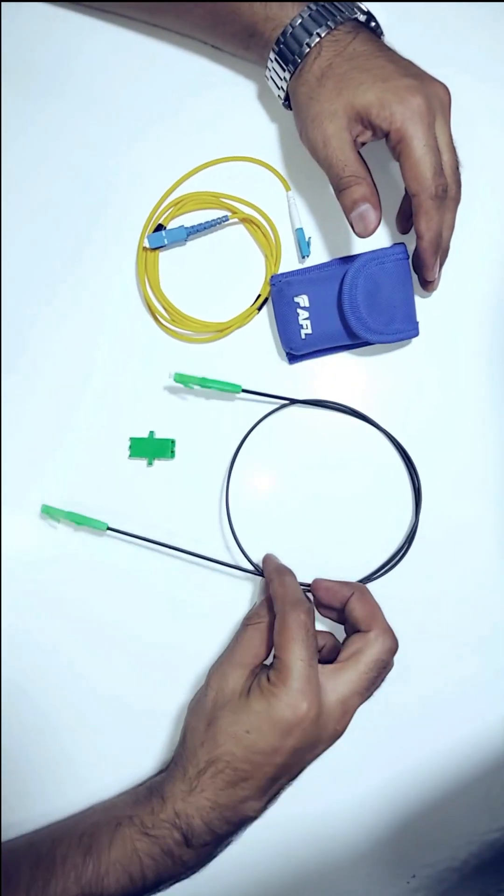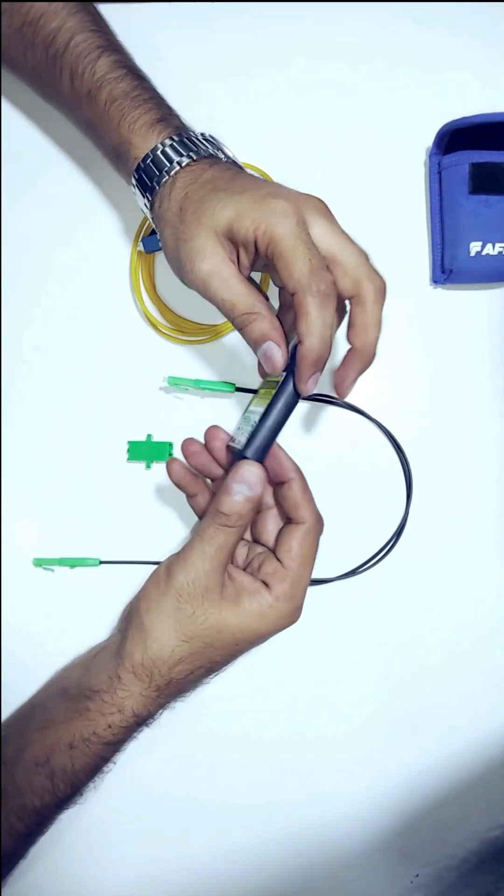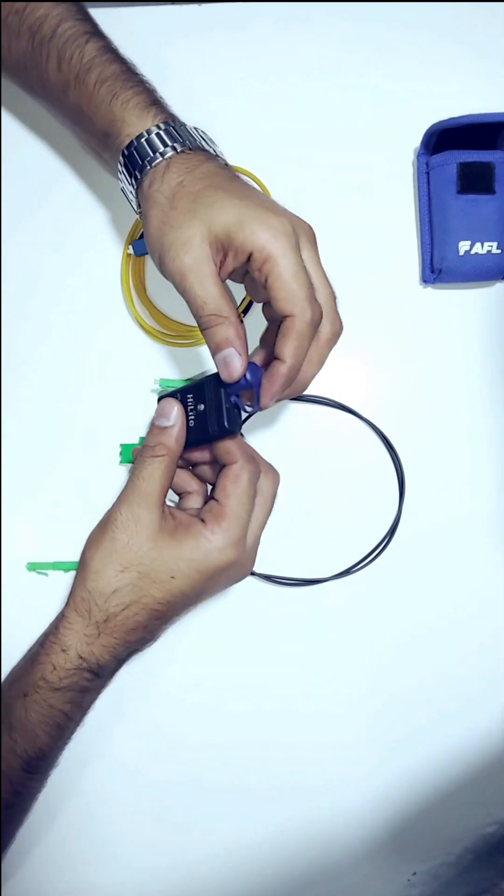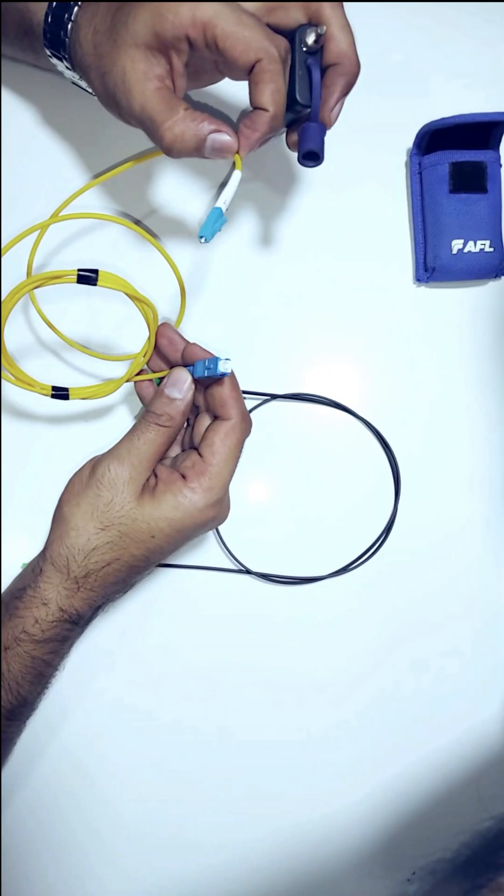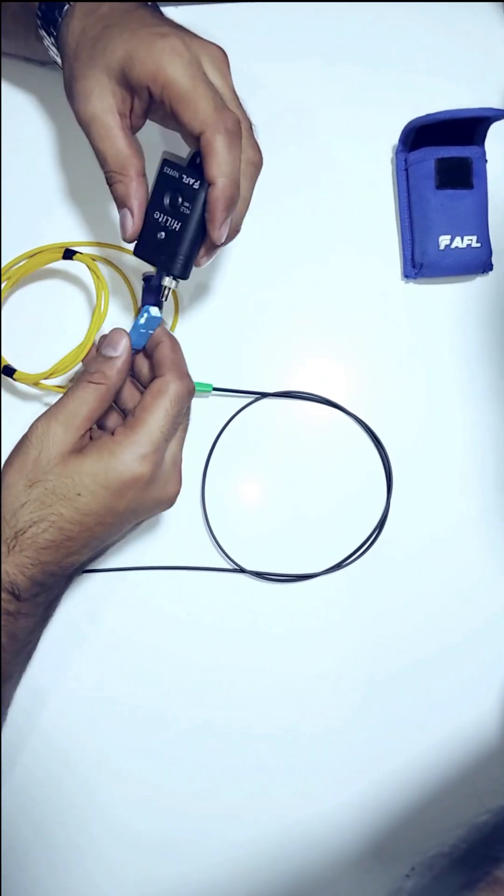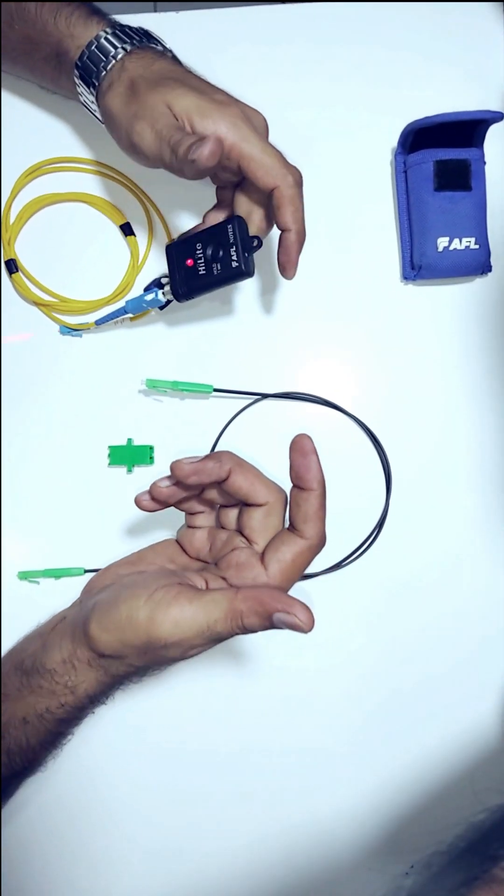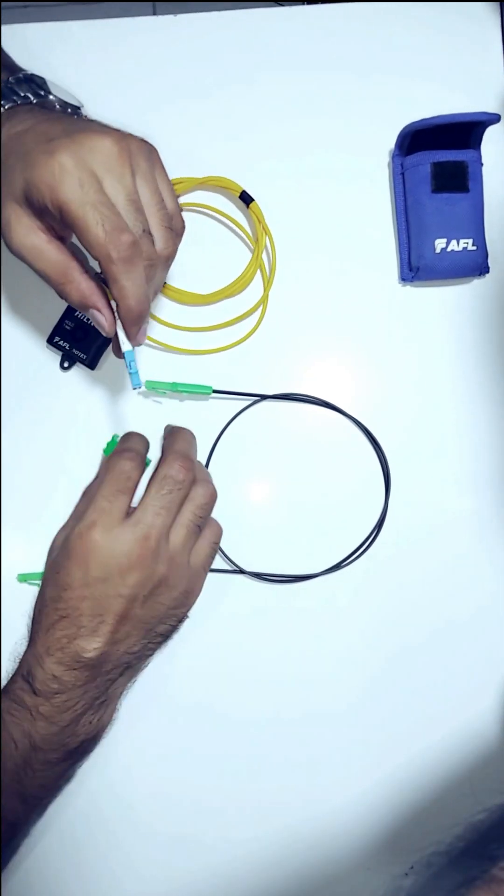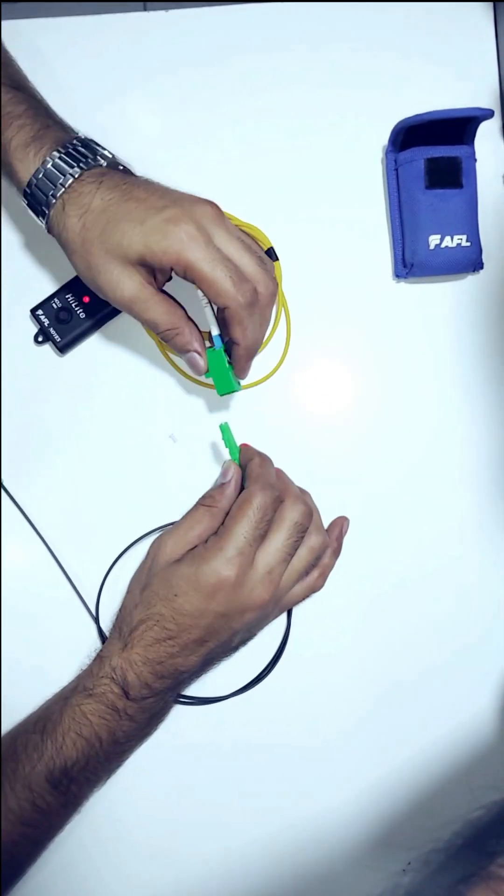Currently, I have the AFL light source. To test the LC connector, we'll use an SC to LC patch cord and join it with the help of an adapter. As you can see, the light is coming through strong, which confirms our termination was successful. Thank you for watching.